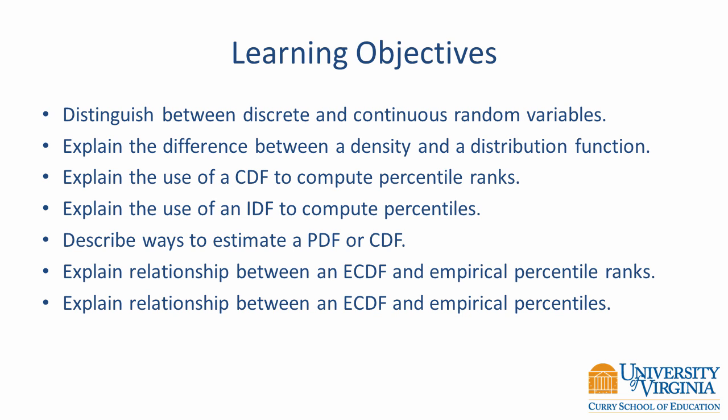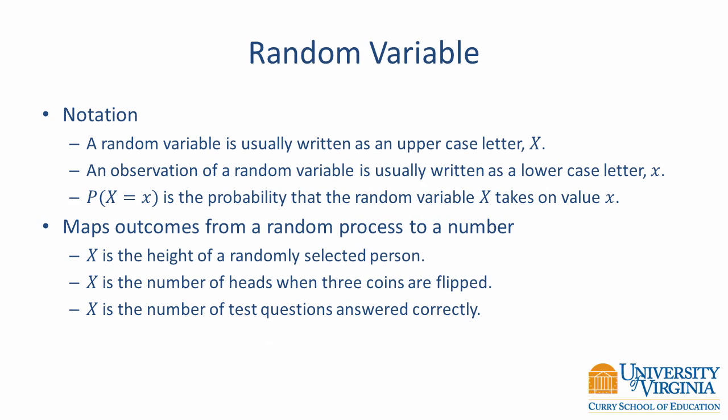Let's start with some basic terminology and a review of probability. A random variable maps outcomes from a random process to a number. It is typically notated with an uppercase letter, and a specific observed value of a random variable is denoted with a lowercase letter. For example, let the random variable X be the height of a randomly selected person, or the number of heads when three coins are flipped, or the number of test questions answered correctly.